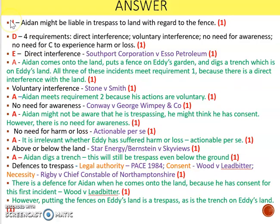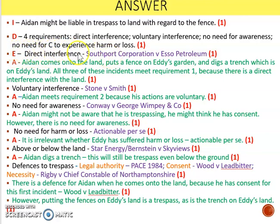I've identified that Aiden might be liable in trespass to land, defined the requirements in my D — direct interference, voluntary, no need for awareness, no need for harm or loss — and then I've used two different colored fonts so you can see the nice balance in my answer. In black font I've explained each element; in purple I've cited the cases. So it goes: explain, apply, explain, apply — black, green, black, green — which means I'm getting AO1, AO2, AO1, AO2 throughout.